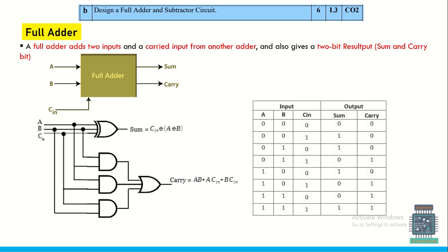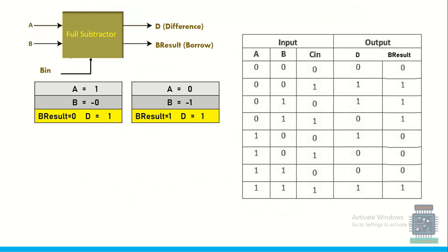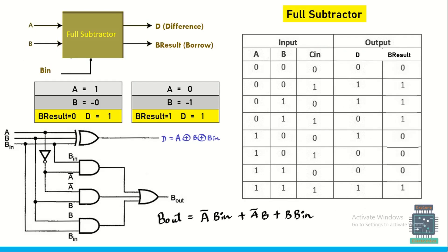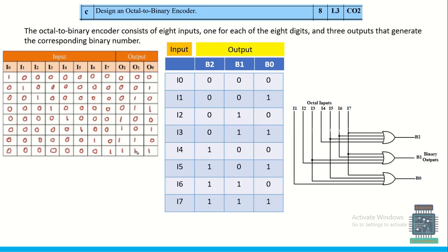The question 'Design full adder and full subtractor circuit' is straightforward. Write the truth table for the full adder and implement it, and similarly for the full subtractor, show how the borrow and difference are obtained. A separate video in the playlist covers this design in detail.